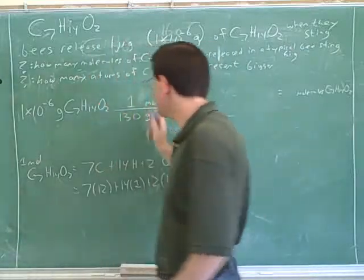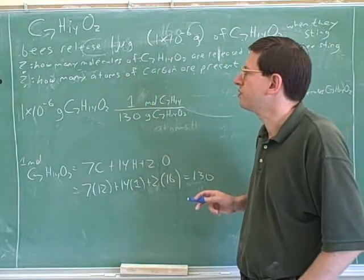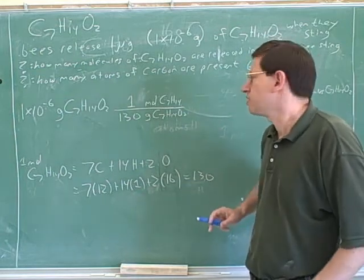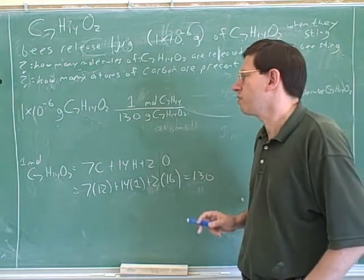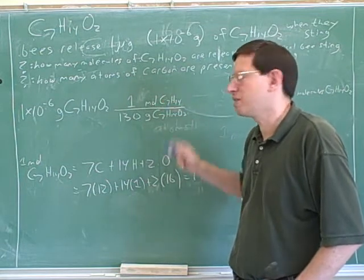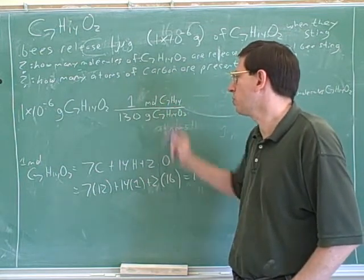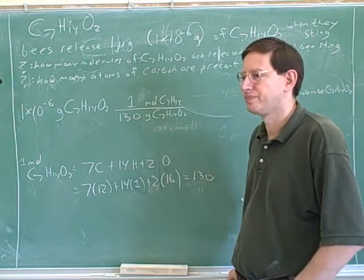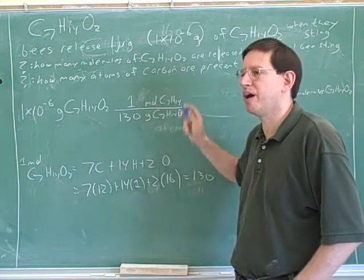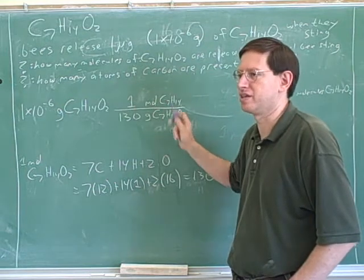The conversion ratios don't have anything to do with the specific numbers you're given in the problem. We're not saying that we really have only one mole of this molecule. We're saying that the periodic table told us the mass of one mole. So this is not the number of moles that we actually have in the problem — it's the number of moles that the periodic table is telling us about.